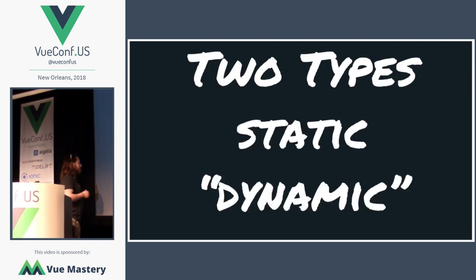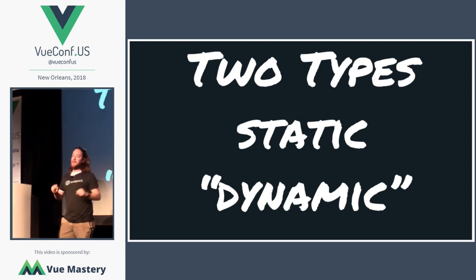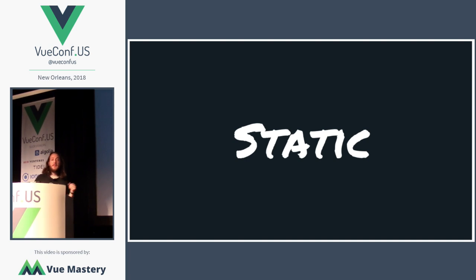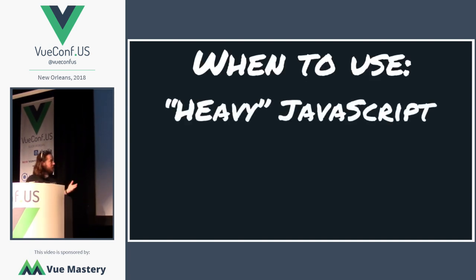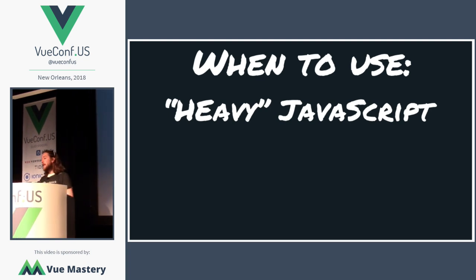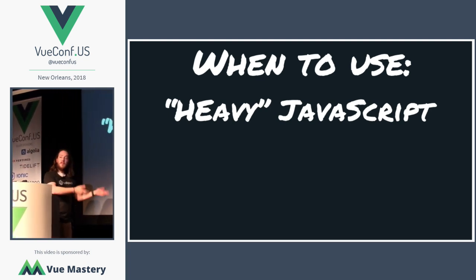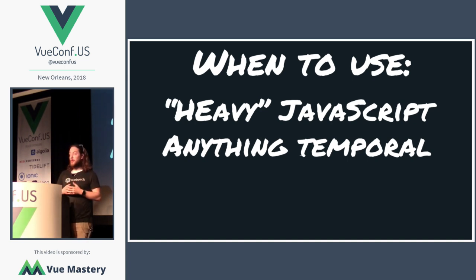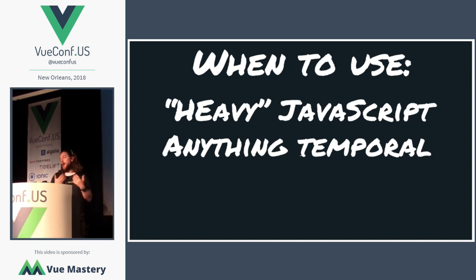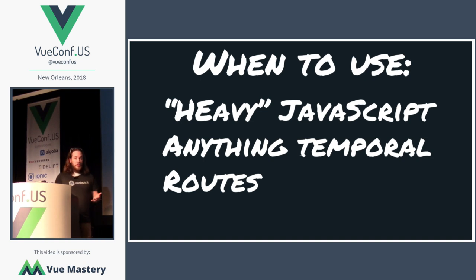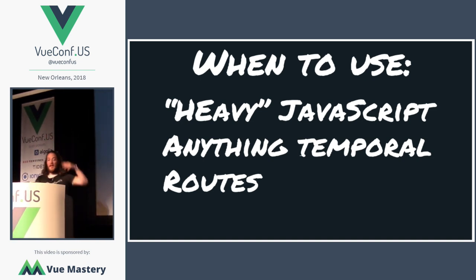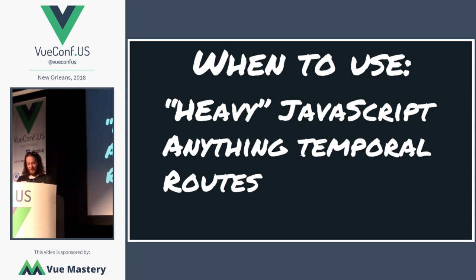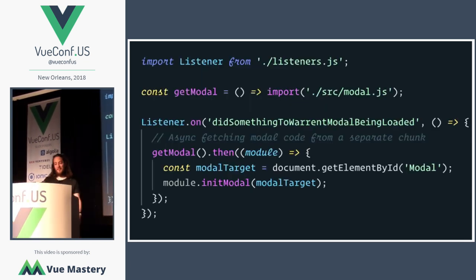There are two types of code splitting: static and dynamic — because nothing webpack does is purely dynamic. Static: use it when you have JavaScript you don't need up front. Use it for modals or anything that doesn't show on the initial page until a user interacts — I call that temporal. Always code split your routes — there's never a time you shouldn't.